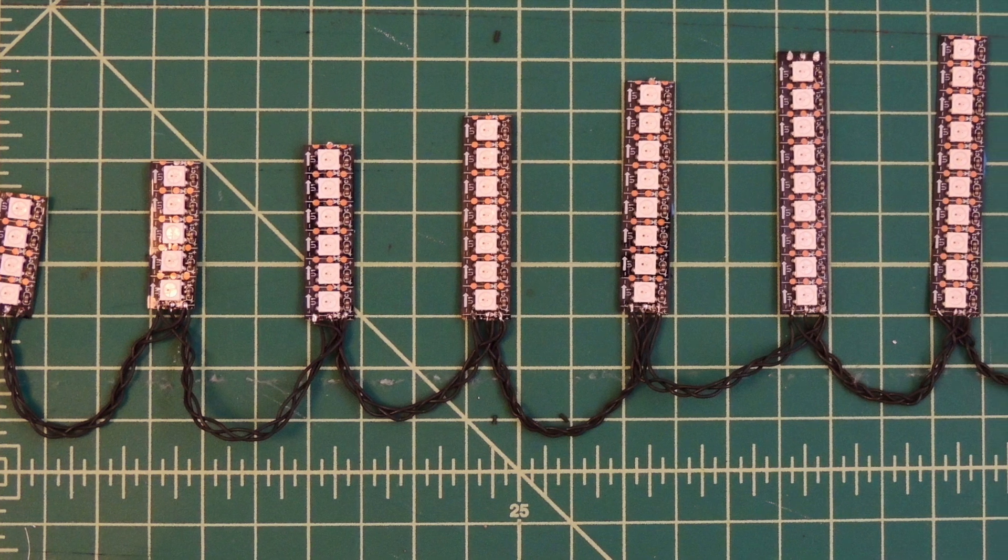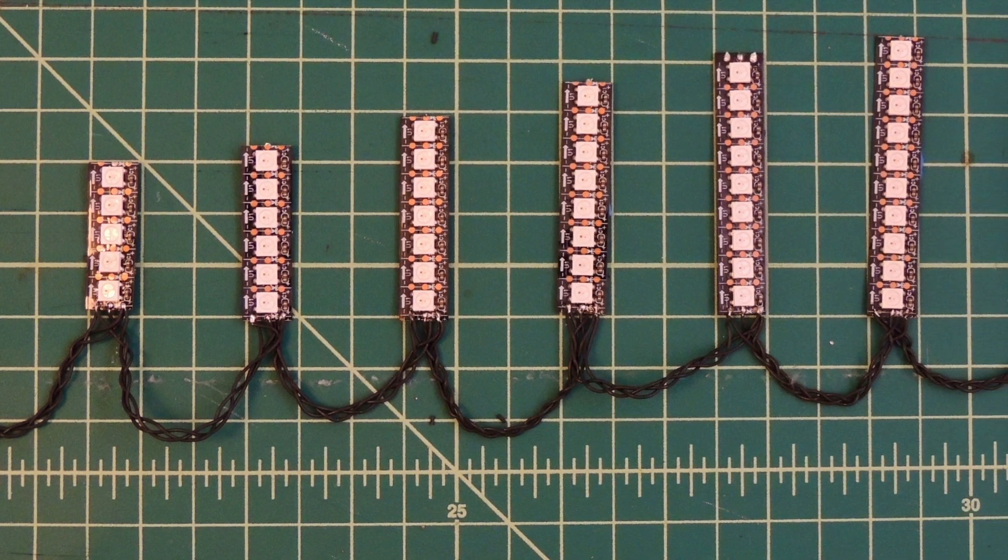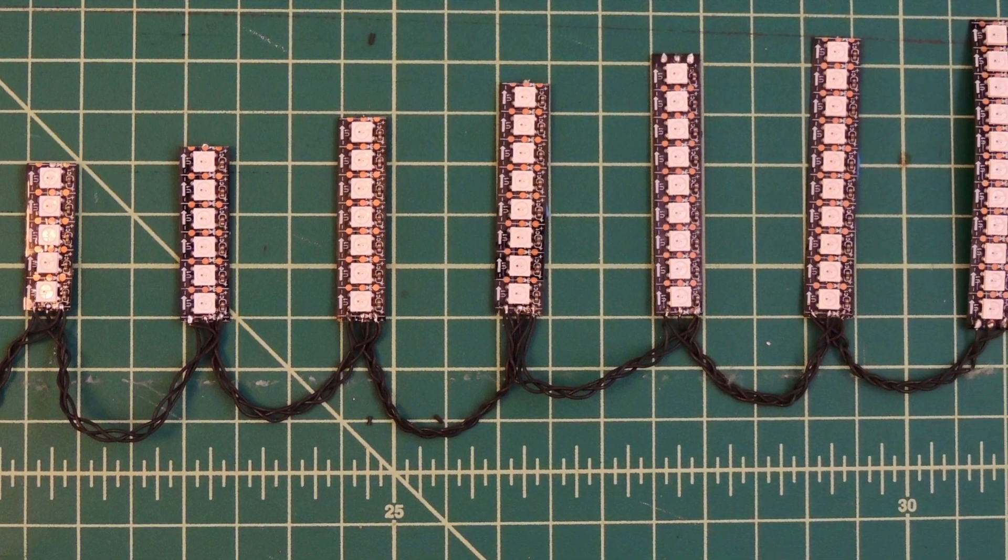Continue to solder sections and braid together wires until one side is complete, then complete the other side.